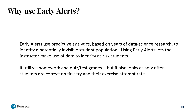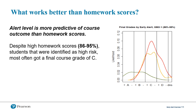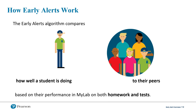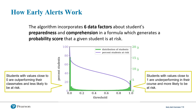It lets you as the instructor make use of data to identify at-risk students. It utilizes homework and quiz/test grades, but it also looks at how often students are correct on the first try, how they attempt exercises, and so on. The alert level is far more predictive of course outcome than homework success. The algorithm compares how well a student is doing to their peers based on their performance in MyLab on both homework and tests. The algorithm incorporates six factors about student preparedness and comprehension in a formula which generates a probability score that a given student is at risk.